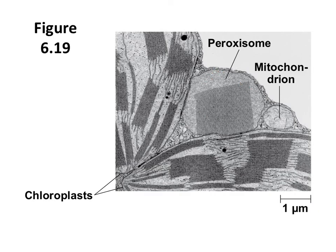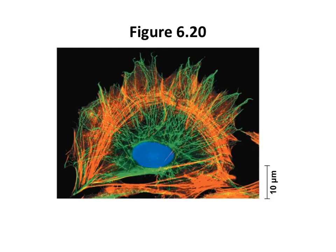Peroxisomes are specialized metabolic compartments bounded by a single membrane. They break down hydrogen peroxide and convert it into water. Peroxisomes perform reactions with many different functions — some can use oxygen to break fatty acids down into smaller molecules, while peroxisomes in the liver detoxify alcohol and other harmful compounds by transferring hydrogen from the poisonous compounds to oxygen. The cytoskeleton of the cell is a network of fibers extending throughout the cytoplasm. It organizes the cell's structures and activities, anchoring many organelles to the cell itself. It is composed of three types of molecular structures: microtubules, microfilaments, and intermediate filaments. The role of the cytoskeleton is to support the cell and also for motility in those cells that are able to be mobile.